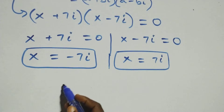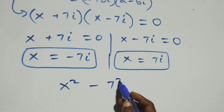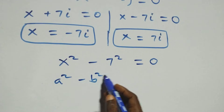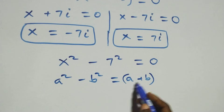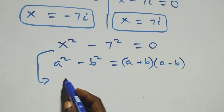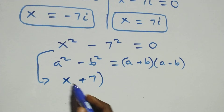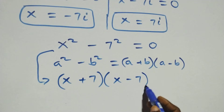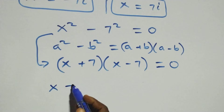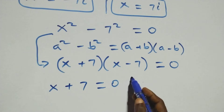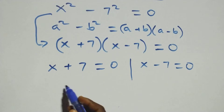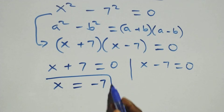For the second case, x squared minus 7 squared equals zero, we apply the difference of squares again: (x plus 7)(x minus 7) equals zero. This gives two possible cases: x plus 7 equals zero, or x minus 7 equals zero. Solving, we get x equals negative 7.